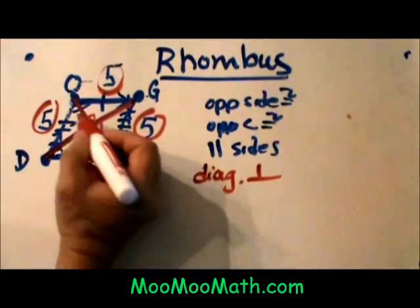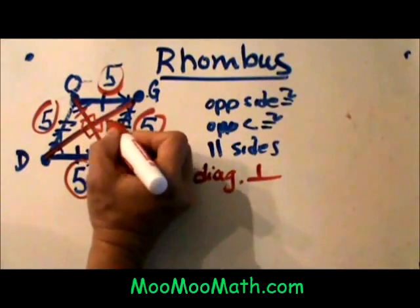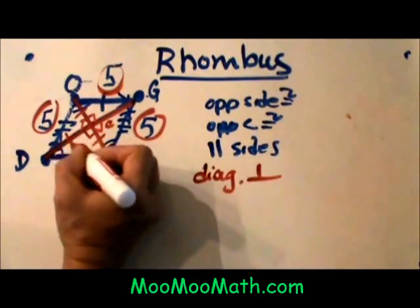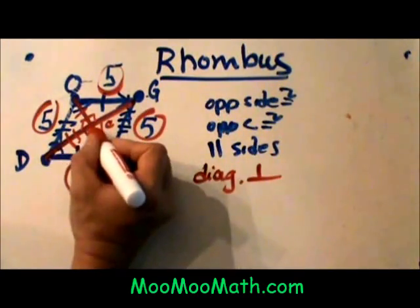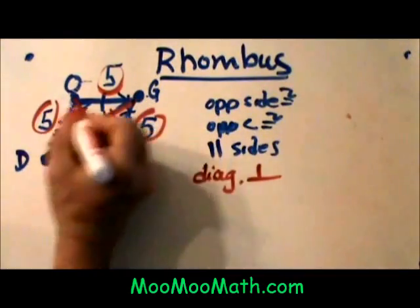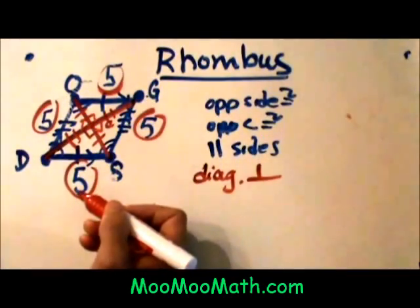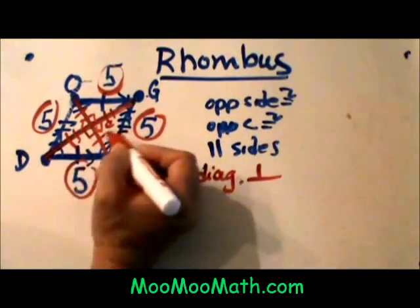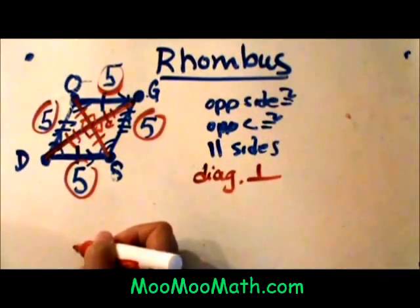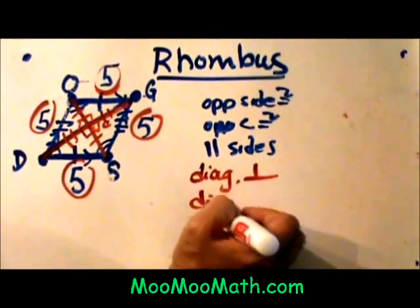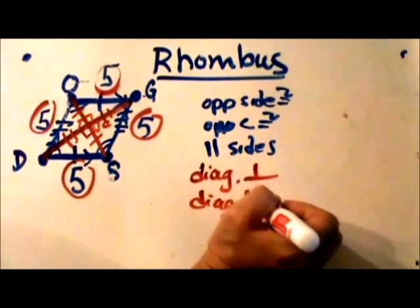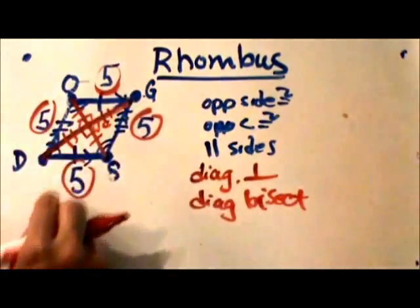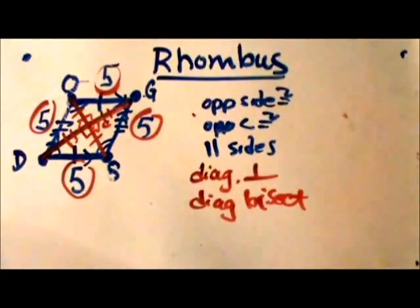What is going to happen is O to the center — let's call that C — and C to S: these two segments are congruent. Then D to C and C to G are also congruent, and you can see we actually have four congruent triangles. These smaller triangles are reflections and are congruent to each other. So another property is the diagonals bisect each other, which means they cut each other in half — OC and CS are congruent.